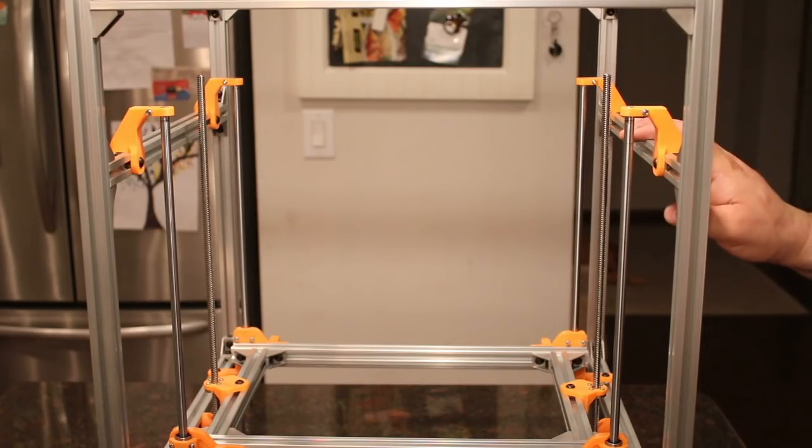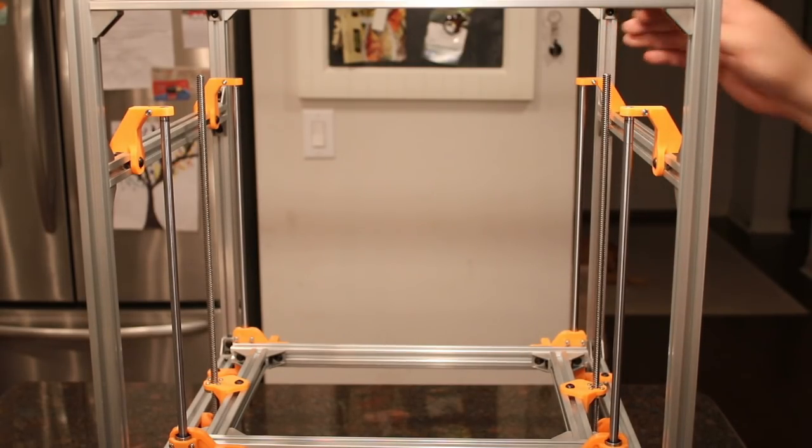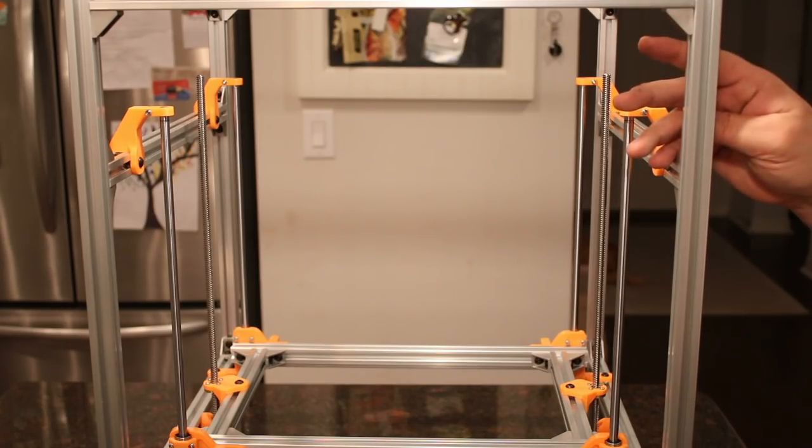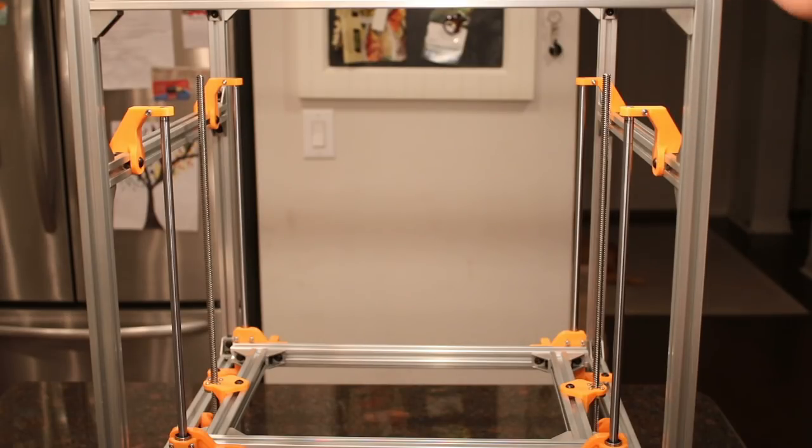All right. So next time, we're going to go ahead and start installing the Y-axis rods. We're going to install the motor mounts and the XY stepper motors. And then after we do that, we will assemble the XY carriage and the carbon fiber rods. See you then.